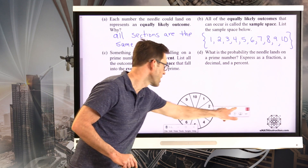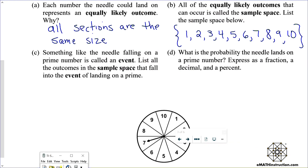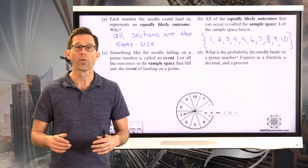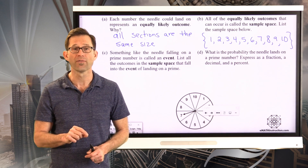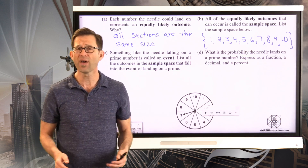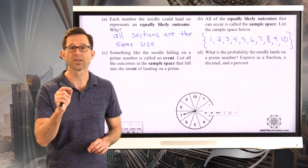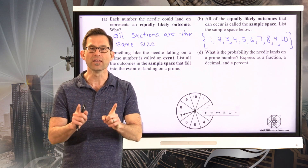Something like the needle falling on a prime number is called an event. List all outcomes in the sample space that fall into the event of landing on a prime. An event is something we find the probability of — like 'it rains tomorrow,' or the spinner landing on a number less than 5. In this case, the event is landing on a prime number, and we want to list every equally likely outcome from the sample space that falls into that event.